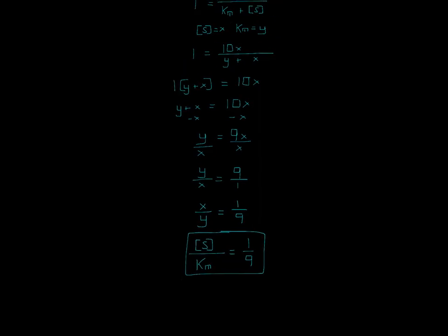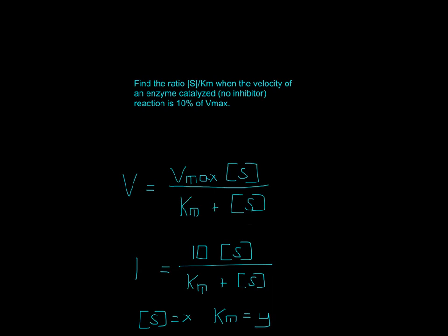And so therefore we would just resubstitute those variables. So we said that substrate concentration is X, so X is substrate concentration, and then Km is Y. So we have that. And that equals 1 over 9. And that's what the original question asked.